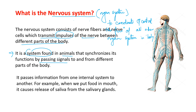The nervous system passes information from one internal system to another. For example, when we put food in our mouth, it causes release of saliva from salivary glands. What actually happens is that impulses are received by the salivary glands, which leads these glands to produce saliva. This is how the nervous system functions.